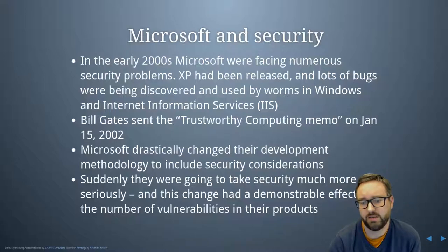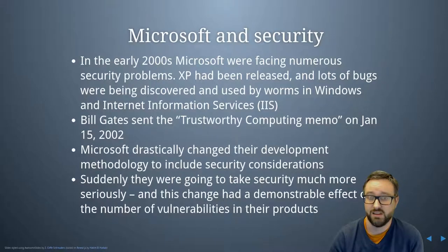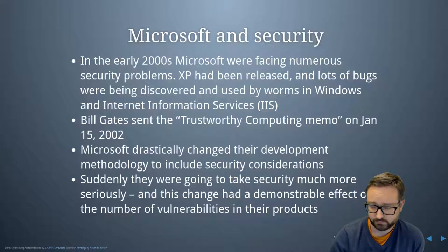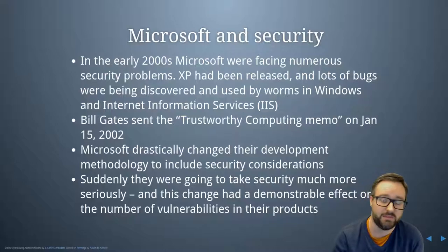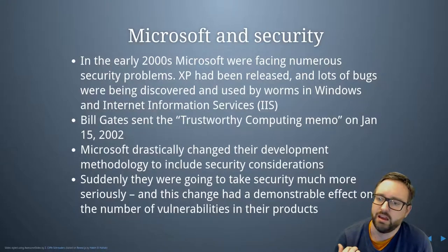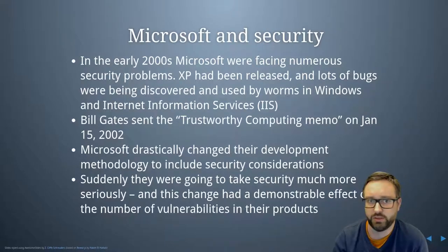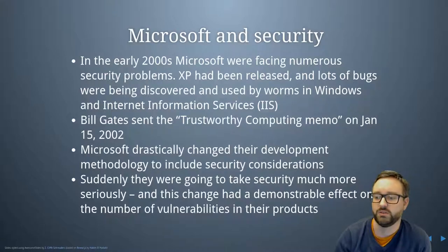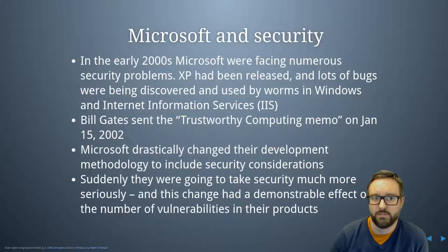In January 2002, Bill Gates sent the trustworthy computing memo to all members of staff at Microsoft saying that from now on they're going to take security seriously and build it into everything they do. They stopped developing new features and stopped releasing products, and actually spent time on training — getting all the developers at Microsoft some security training and actually building in security. They drastically changed their development methodology to include security considerations at every stage of software development.